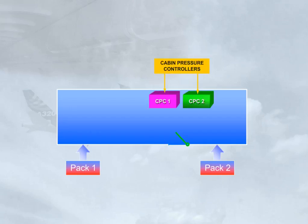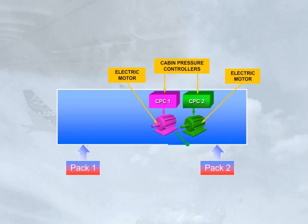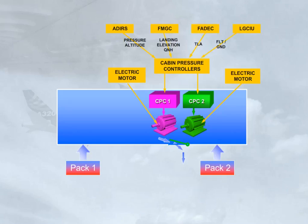Automatic control of the outflow valve is provided by two cabin pressure controllers. Each controller has an electric motor to move the outflow valve. The CPC receives data from the Air Data Inertial and Reference System, the Flight Management and Guidance Computer, the Full Authority Digital Engine Control, and the Landing Gear Control and Interface Unit, in order to elaborate the different pressurization control laws.